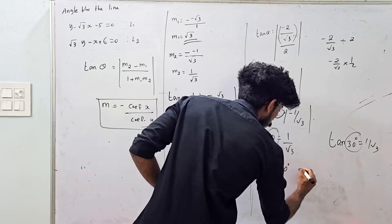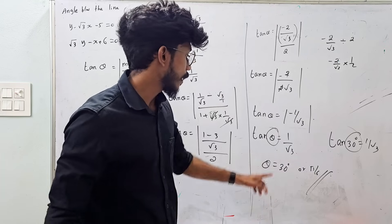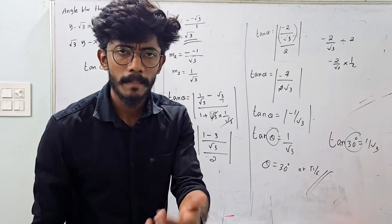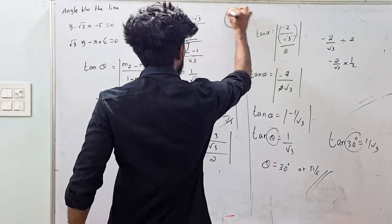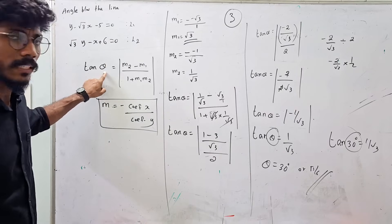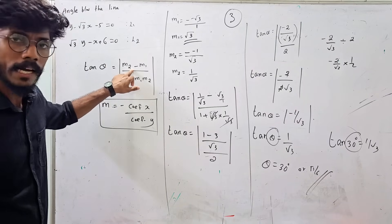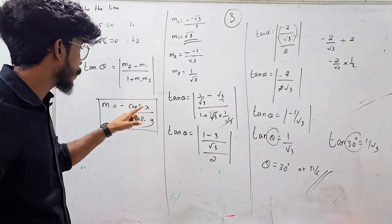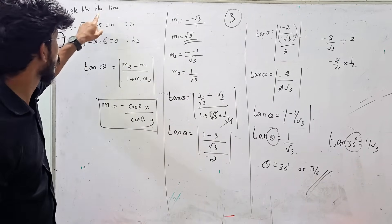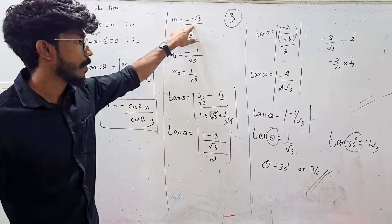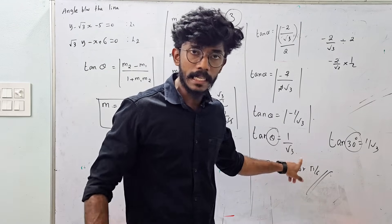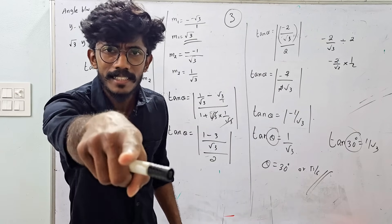Theta equals 30 degrees, or equivalently π by 6 radians, because tan θ equals 1 by root 3. So theta equals 30 degrees. That's three marks. The slope of m1 was root 3, m2 was 1 by root 3, substitute and solve for tan θ equals 1 by root 3, giving 30 degrees.